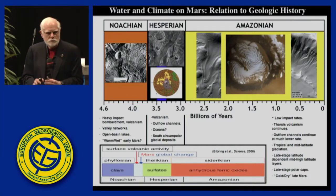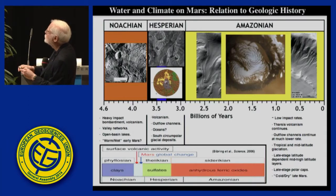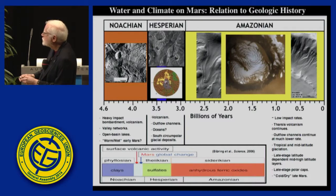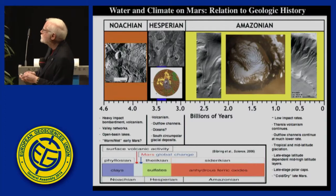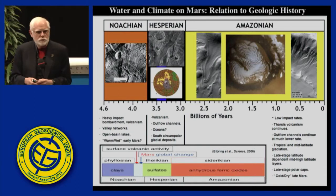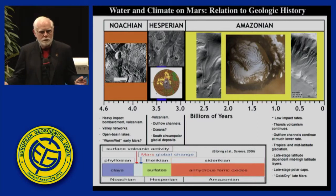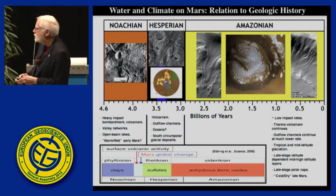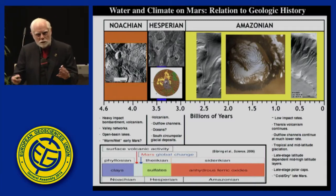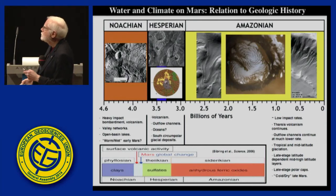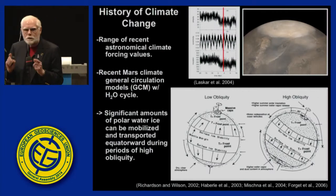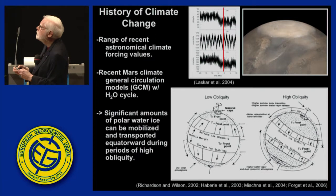Four and a half billion years of Mars history is laid out in front of us. From orbiting spacecraft we have the mineralogical record — from anhydrous oxides to clays separated by sulfates, indicating a lot of water during that transition period. What caused Mars to go from a possibly warm and wet climate to one more like Antarctica? We have a robust geological record, astronomical climate forcing values from Jacques Laskar, and recent climate models from François Forget in Paris that tell us what happens when we mobilize Mars's ice.